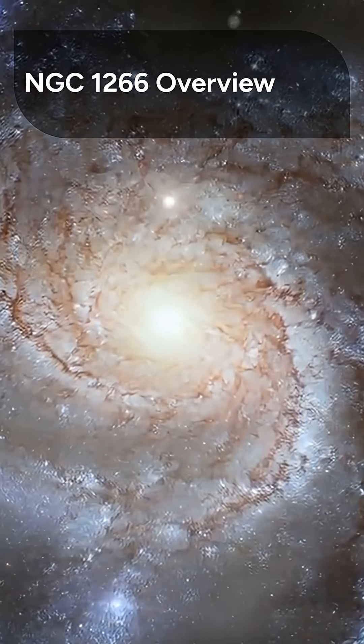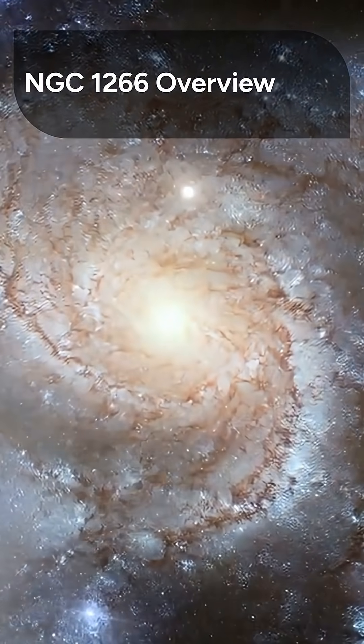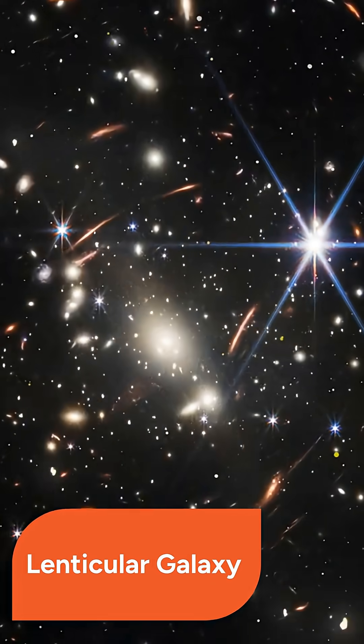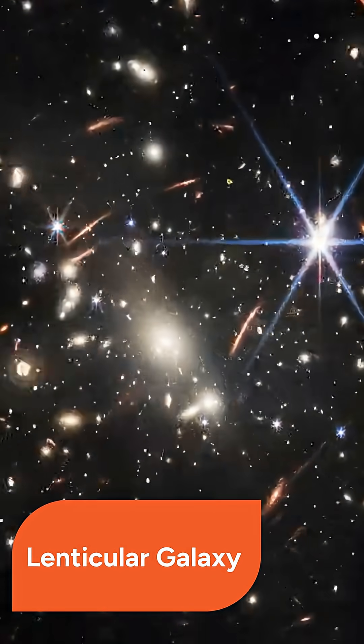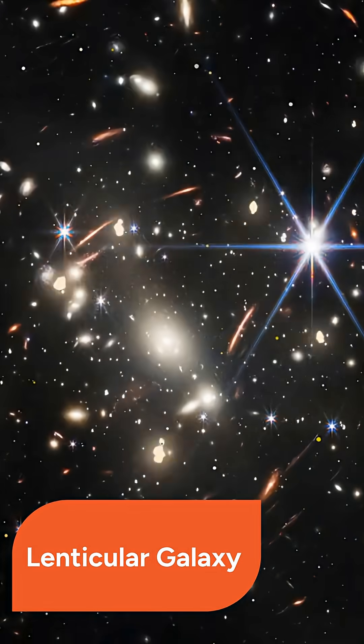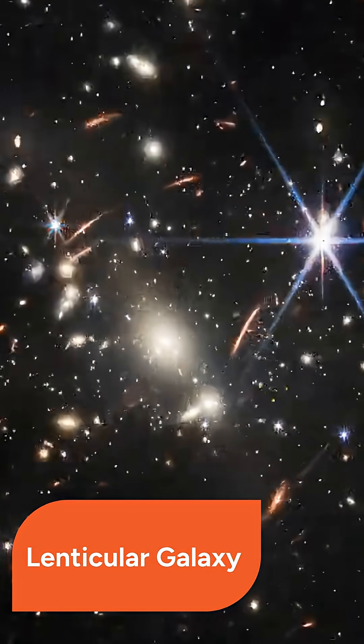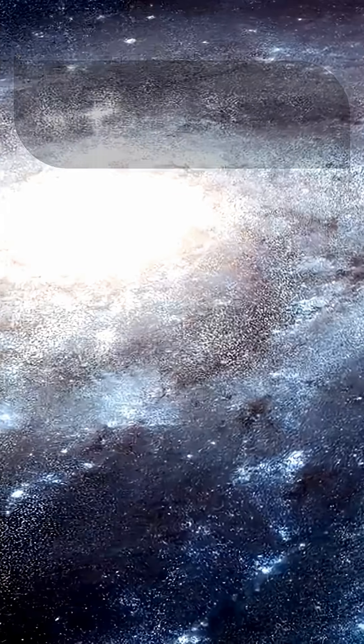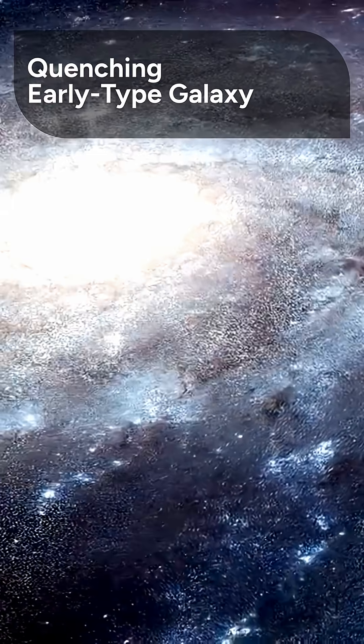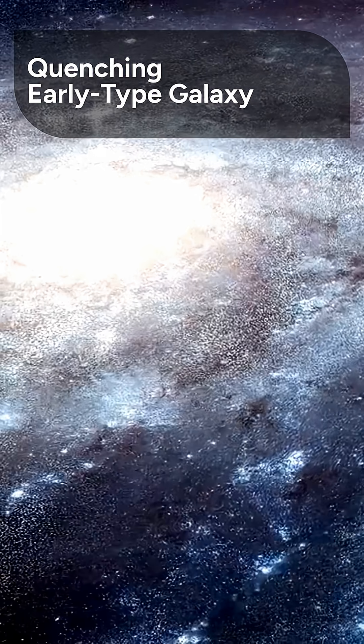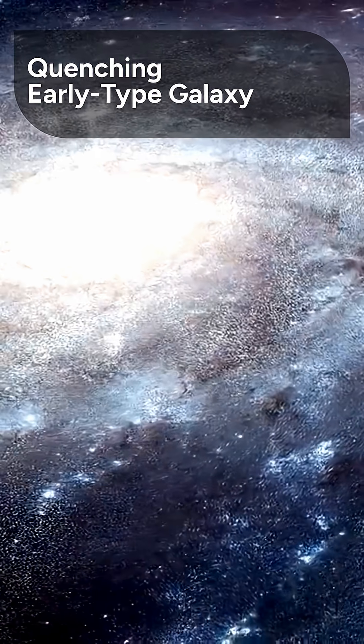Let's first get an overview of NGC 1266, the subject of this important study. NGC 1266 is a nearby lenticular galaxy situated approximately 97.5 million light-years away in the constellation Eridanus. It is classified as a quenching early-type galaxy, and notably, it hosts an obscured Active Galactic Nucleus, or AGN.